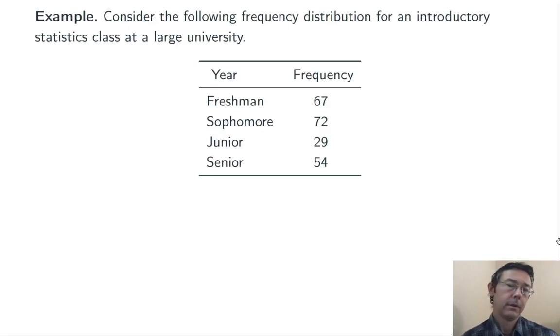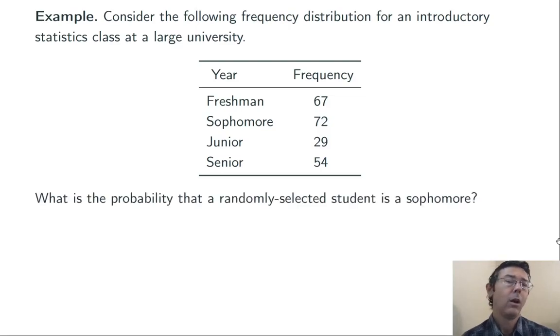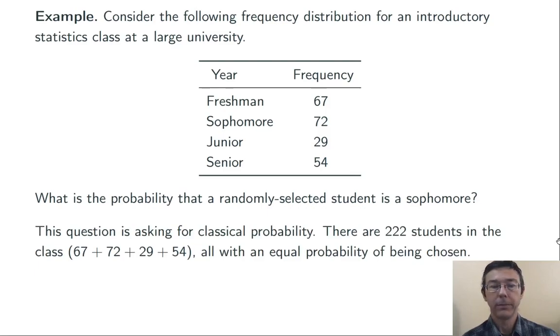Let's run through an example. Here we have a frequency distribution for an introductory statistics class at a large university. What's the probability that we randomly select a person from this class and get a sophomore? This is a classical probability question. There are 222 outcomes total, 222 students in the class, and 72 outcomes that are in the event that we're interested in, that we get a sophomore when we select the person at random. So the probability of randomly selecting a sophomore is 72 divided by 222, about 32.4%.